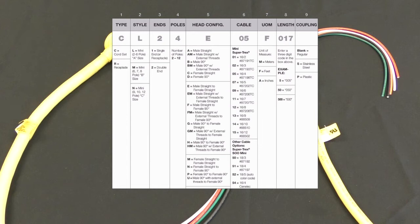You could also build your own cord set if you need something different. This chart shows all of your options including style, single or double end, number of poles, head configuration, which Supertrex cable to use, the length of the cable, and the material of the coupling nut.